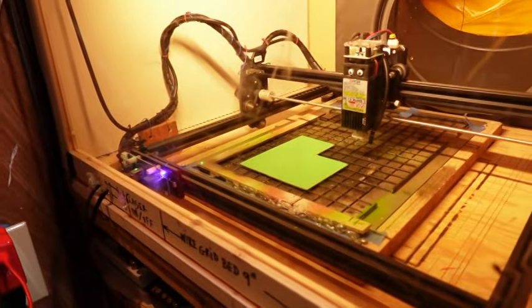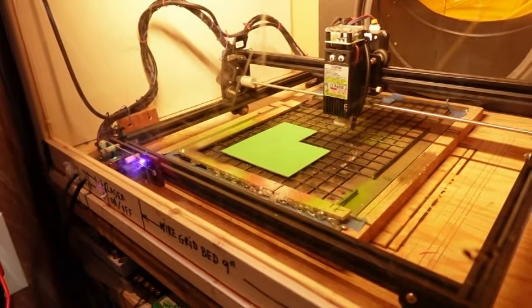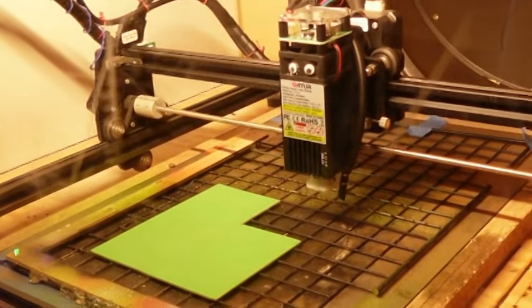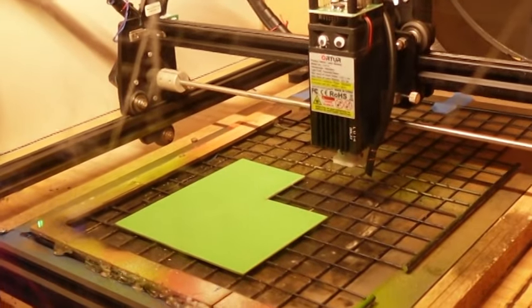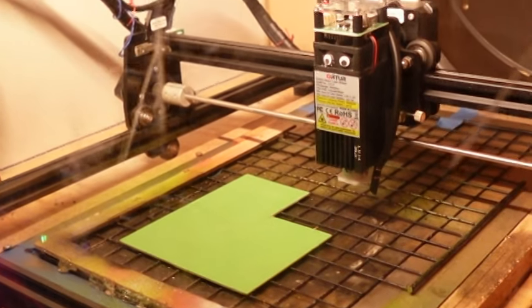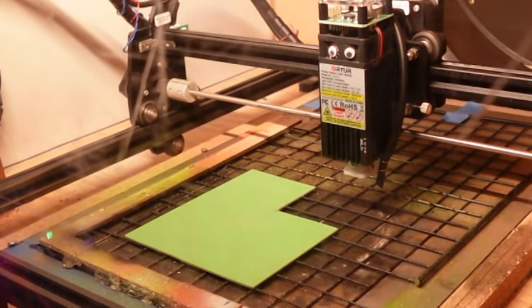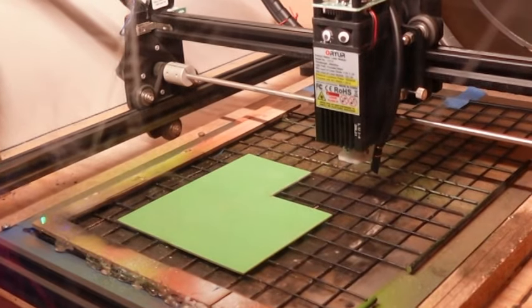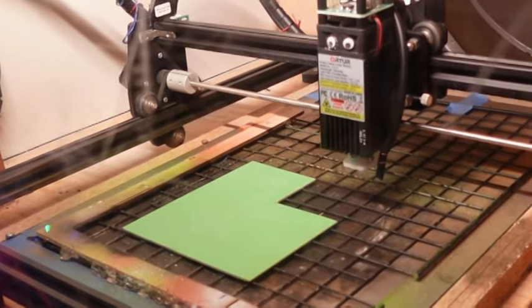Over here is the laser and you can see I have a sheet of green and there's the 5 watt laser, 5 watts output, 20 watts input. So they call it a 20 watt laser. I think that's kind of cheating but that's what they do. So let's watch this burn.